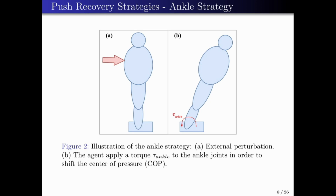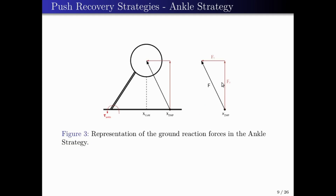As you can see in figure number two, with ankle strategy, the balance is restored using torques generated at the ankle joint, and there is no bending in the hip. The core idea is to move the center of pressure in order to change the tangential ground reaction force, increasing the horizontal component Fx. As a consequence, the motion of the center of mass is affected and therefore the balance is recovered, as illustrated in figure number three.